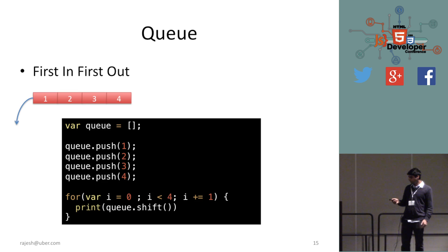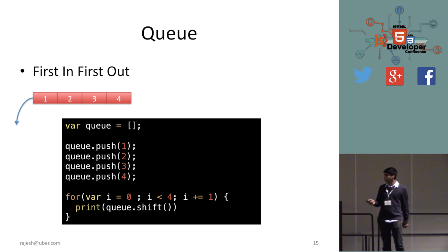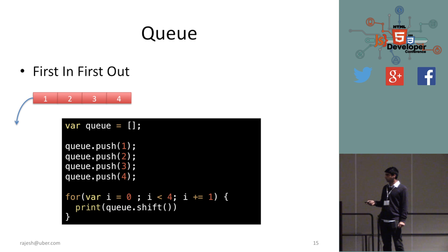A queue is a similar but opposite data structure — first-in, first-out. You push one, two, three, four, and then use shift() to take elements out from the beginning: one, two, three, four. That's a queue.